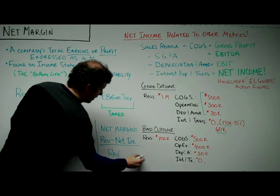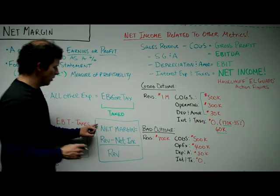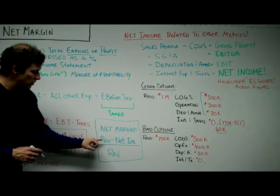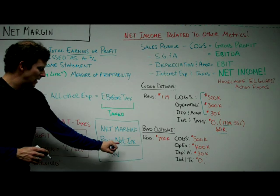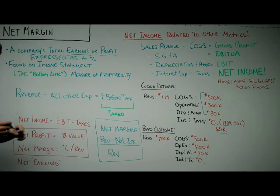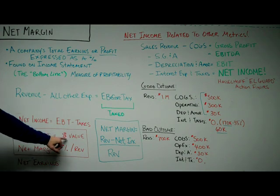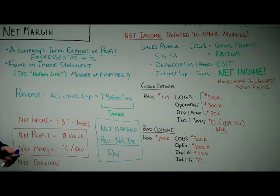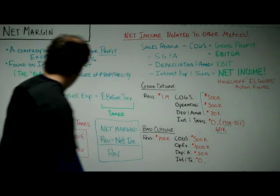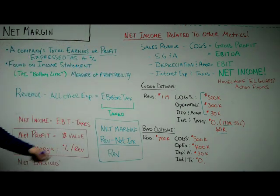The calculation is right here: net margin is net income divided by revenue. It's pretty simple. It's important to understand net profit in relation to net margin. Net profit is expressed as a dollar value, and net margin is expressed as a percentage in relation to revenue.